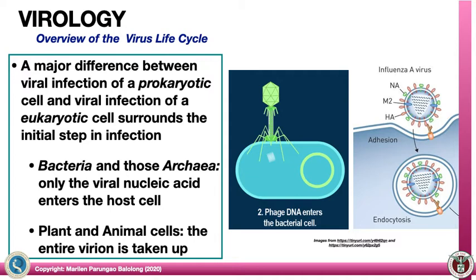There is a major difference between viral infection of a prokaryotic cell and a eukaryotic cell during the first step. For bacteria and archaea, only the viral nucleic acid enters the cell — a bacteriophage injects its genetic material into the cell using lysozyme-like enzymes. For plant and animal cells, on the other hand, the entire virion is taken up through the process of endocytosis following attachment.